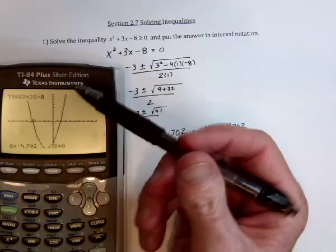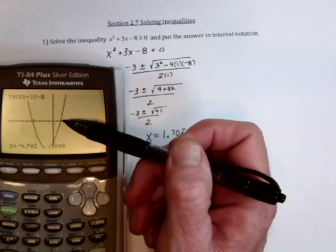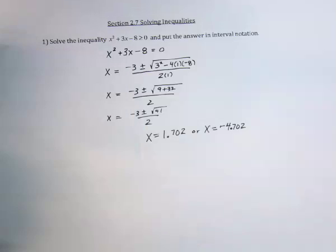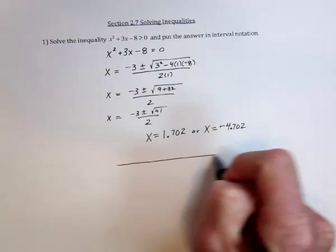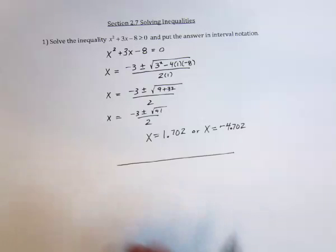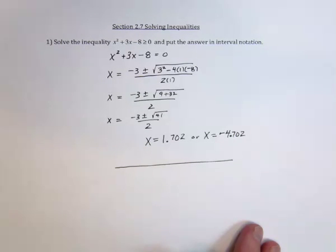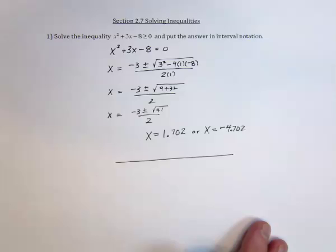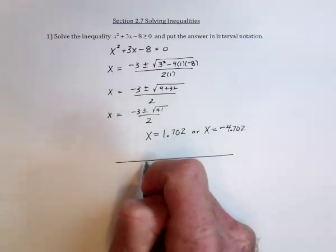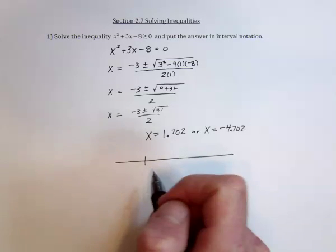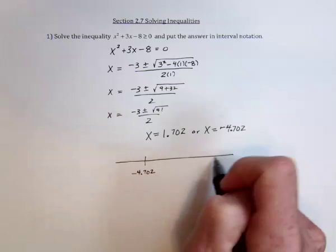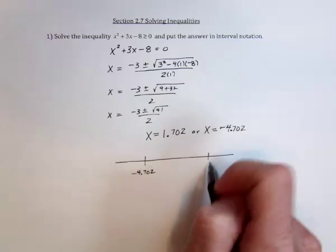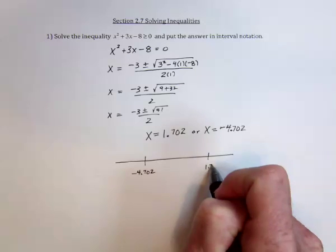Okay. Now we need to put these on a number line. So now I'm going to verify what I believe I saw in the graph and calculator. And that is, over here, there was an x-intercept of negative 4.702. And somewhere to the right over here, a 1.702.